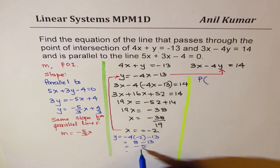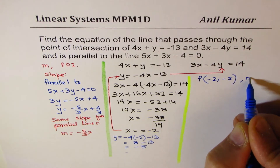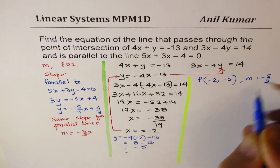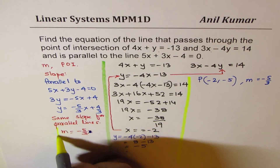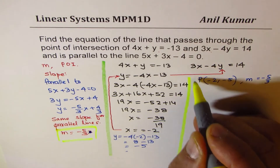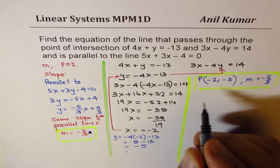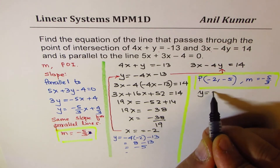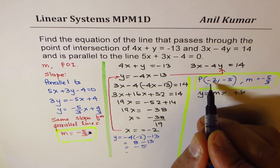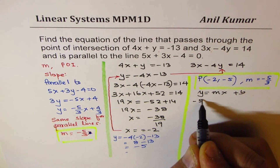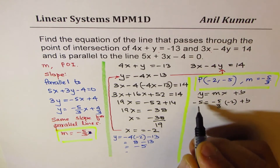We also calculated the slope as -5/3. So we have the slope and the point, and using these we can find the equation in the form y = mx + b. With m = -5/3, x = -2, and y = -5, substituting gives: -5 = (-5/3)(-2) + b, so -5 = 10/3 + b.